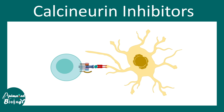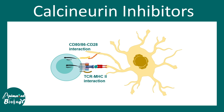Calcineurin inhibitors work by preventing T cells from getting activated. To understand this, we first need to learn how T cell activation happens in the normal scenario. Here is an antigen-presenting dendritic cell presenting a segment of antigen on top of a class 2 MHC molecule. The TCR and MHC interaction gives one signal for T cell activation. The second signal is provided by CD80/CD86 and CD28 interaction. The third signal for activation is the autocrine signaling by interleukin-2. All three signals combined together activate the T cell.